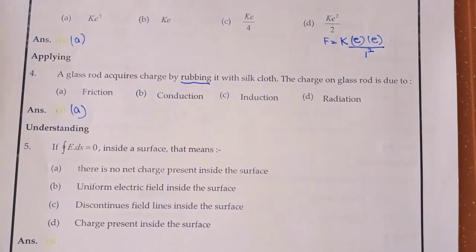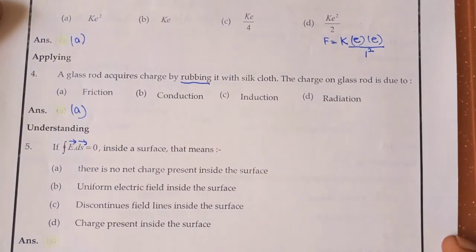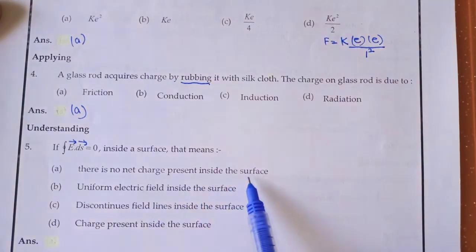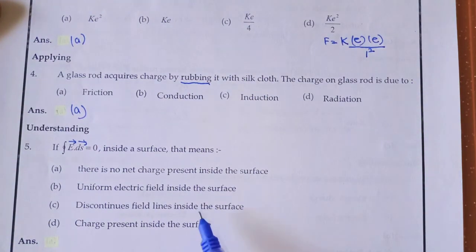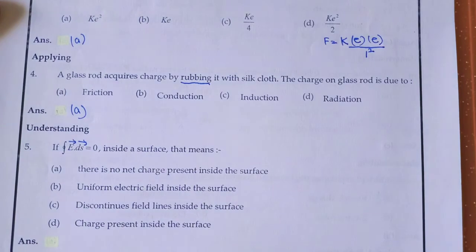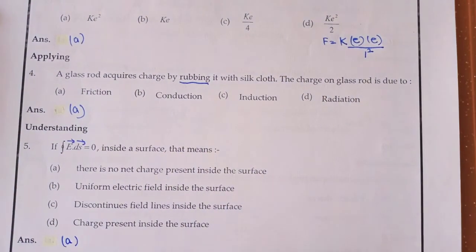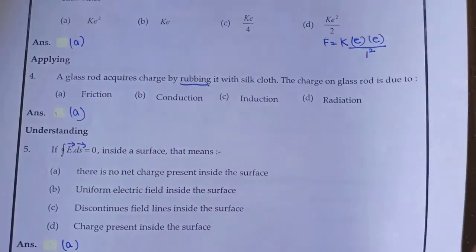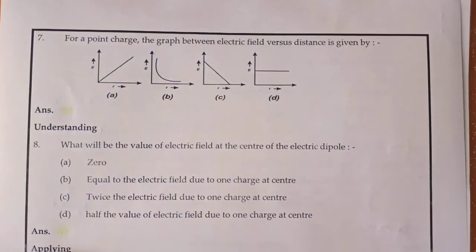Next question: if the closed integral of E·dS equals zero for a surface, what does it mean? The options are: no net charge inside the surface, uniform electric field inside, discontinued field lines, or charge present inside. Since the closed integral of E·dS gives flux, and flux equals zero when there is no net charge inside, the answer is option A.